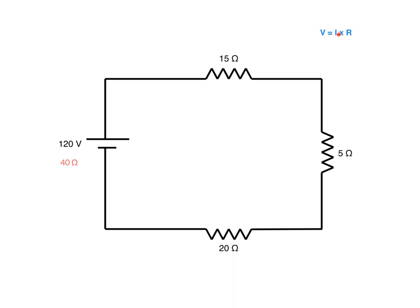We're going to take this formula and transpose it. I equals V divided by R. If you don't know how to transpose, there's a video on transposition. We now know that we have 120 volts and 40 ohms of total circuit resistance. 120 divided by 40 gives us a total current of 3 amps.